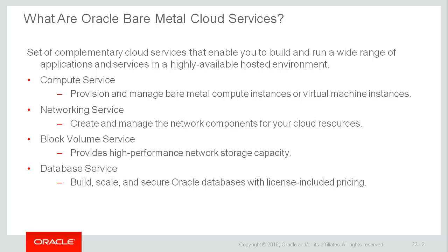Use the Networking Service to create and manage the network components for your cloud resources. You can configure a virtual cloud network with access rules, gateways to support routing, and public and private internet traffic. The Block Volume Service provides high performance network storage capacity. You can use Block Volume to expand the storage capacity of your compute instances, providing persistent data storage that can be migrated across other compute instances.